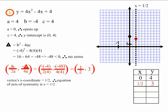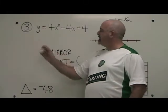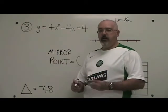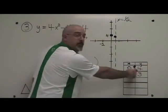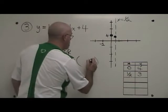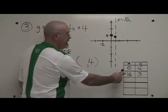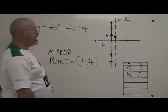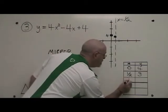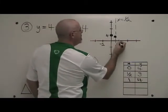This is what example three looks like before we find our mirror point. Let's find the mirror point for example three. To find the mirror point, you need to know the y-coordinate of the y-intercept, which is 4 — so the y-coordinate of your mirror point will also be 4. And you need to double the x-coordinate of the vertex: double 1 half is 1, so the mirror point is (1, 4). Let's put this in the table and on the graph. 1, 4 will be here.